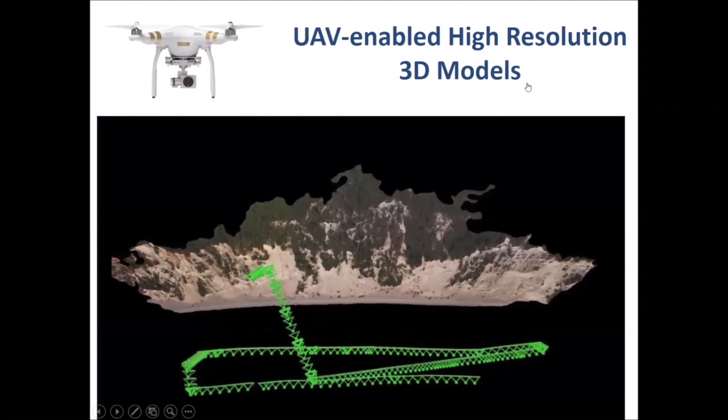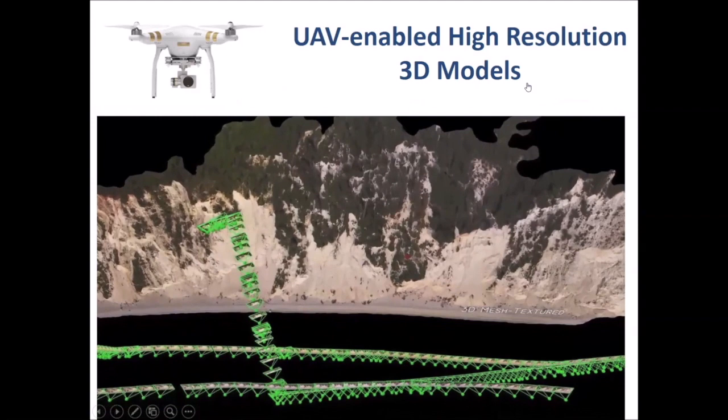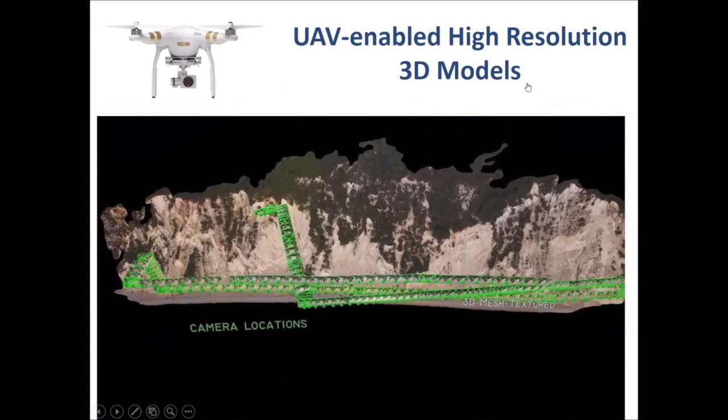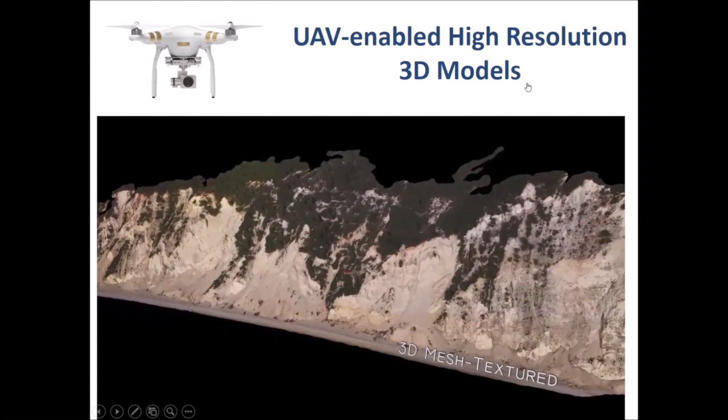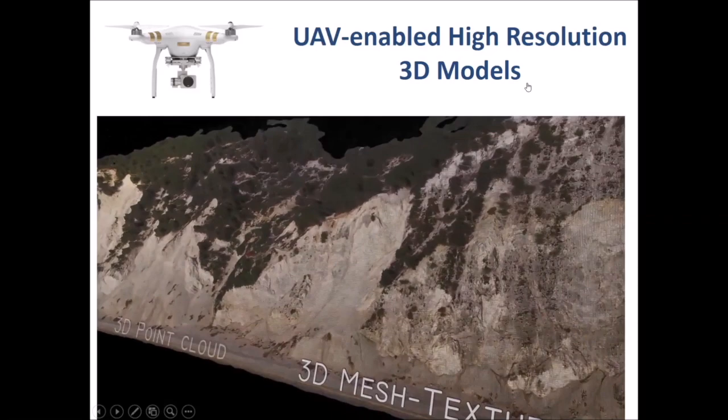This model has centimeter-level resolution and allows us not only to accurately identify the landslides and estimate their size, volume, and how much they moved, but we can actually even characterize the rock mass. To do that, we developed scalable approaches using machine learning that allow us to detect fractures nearly automatically over large areas.